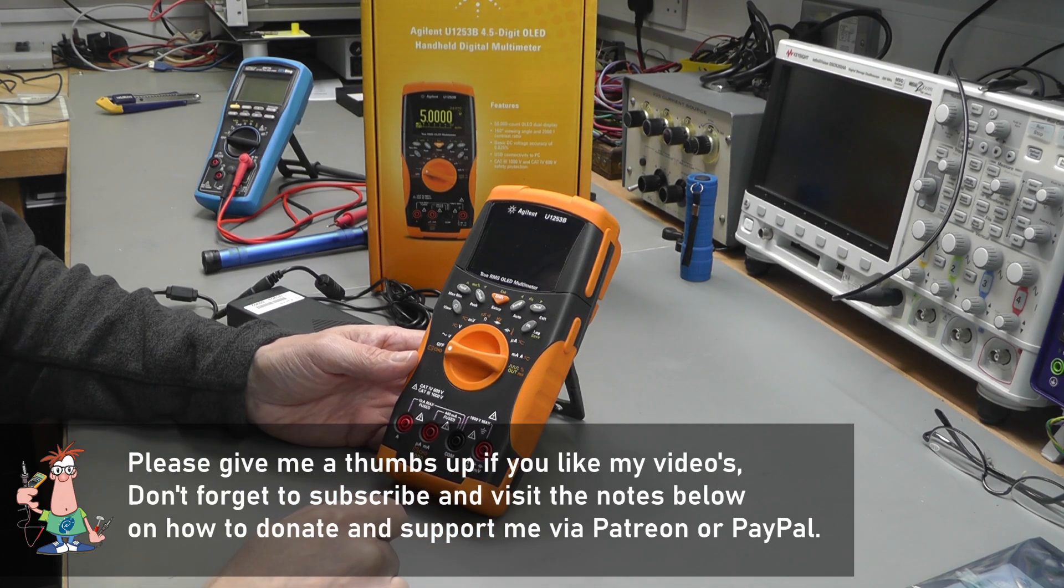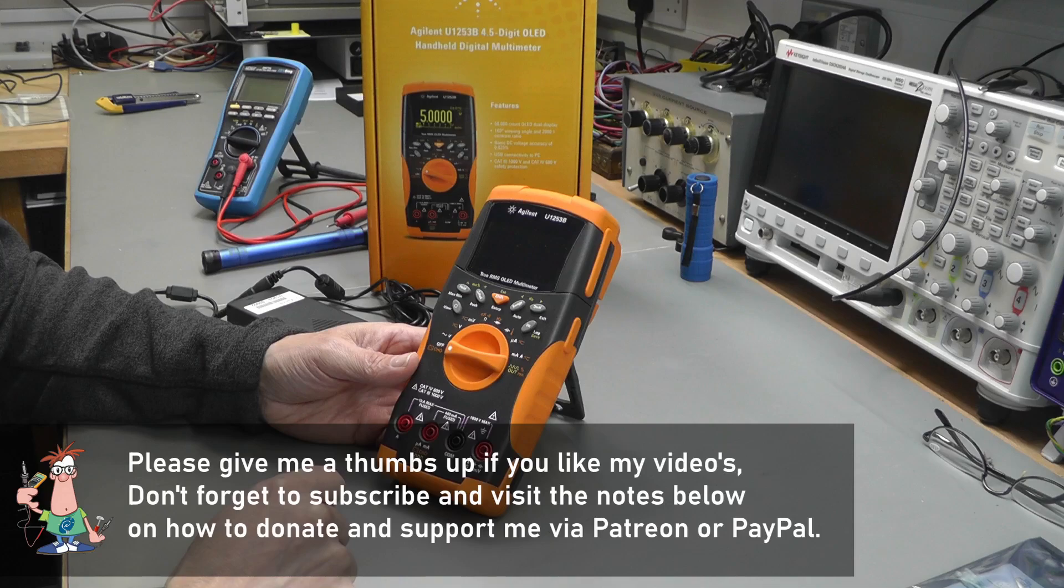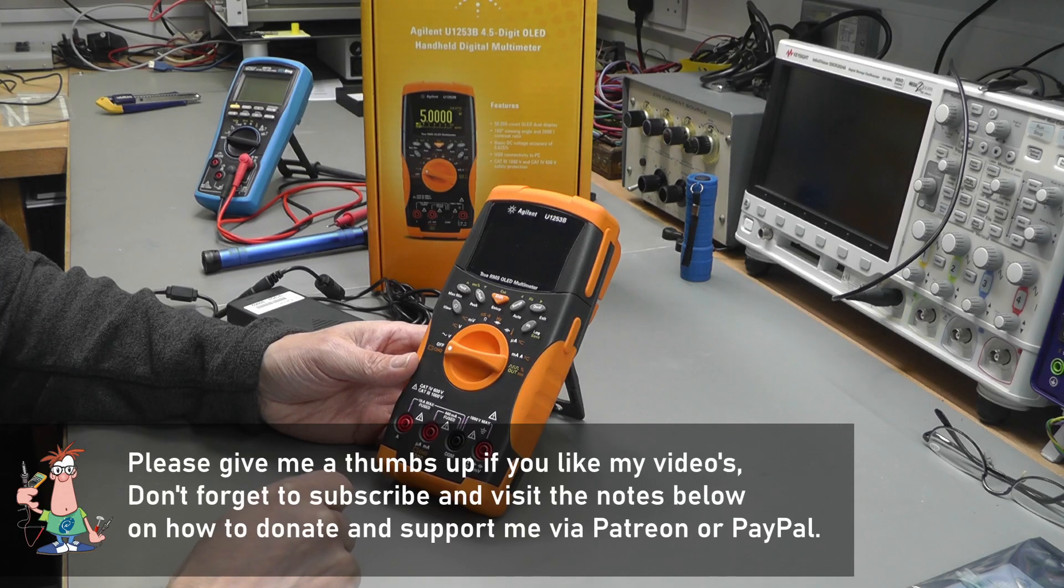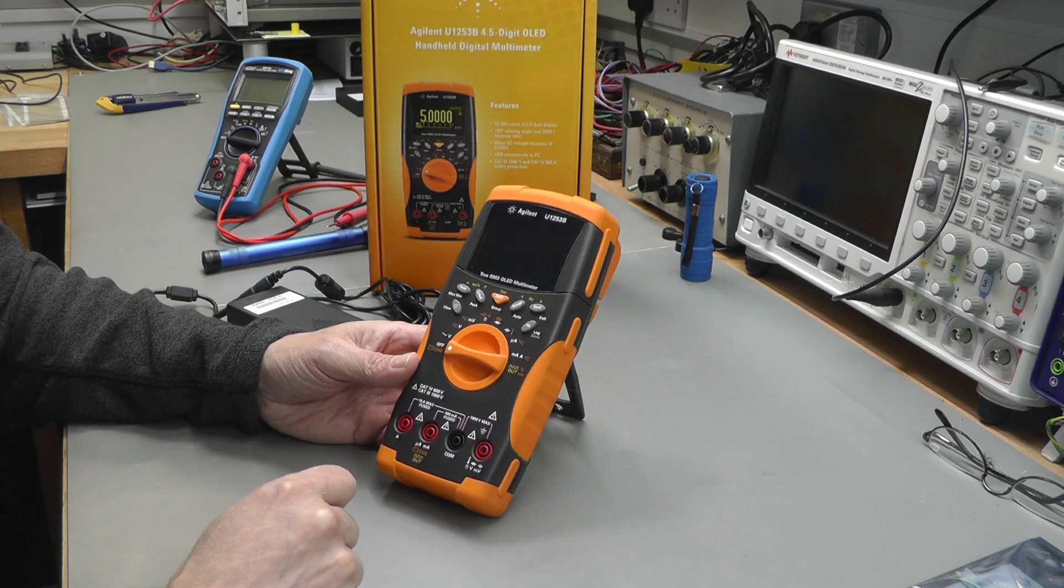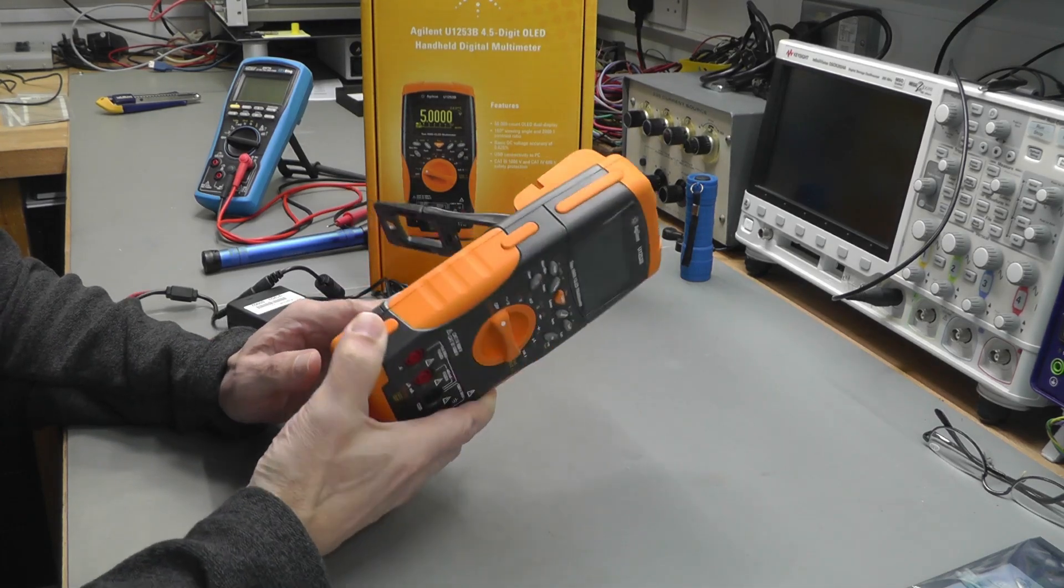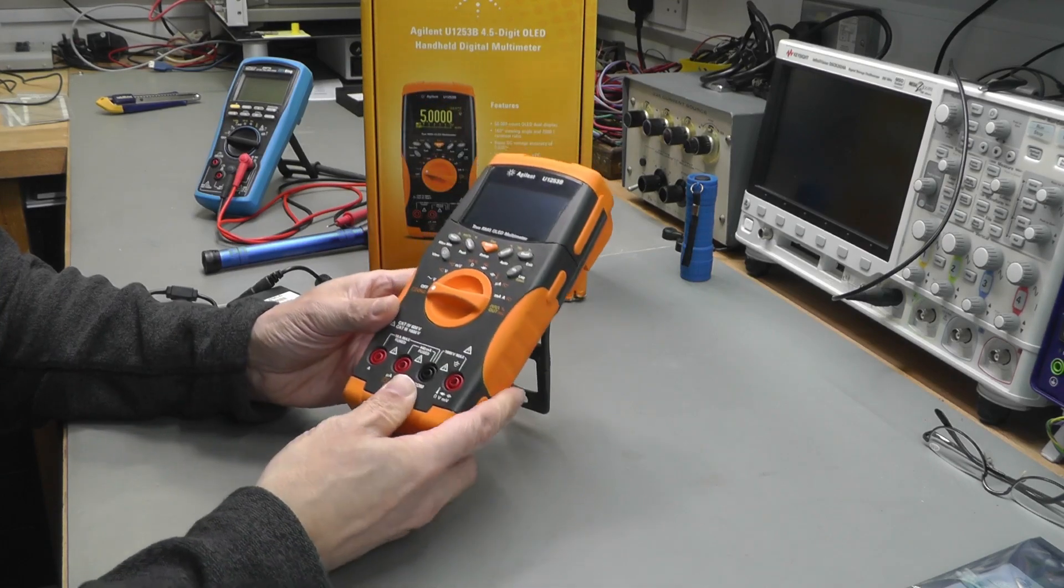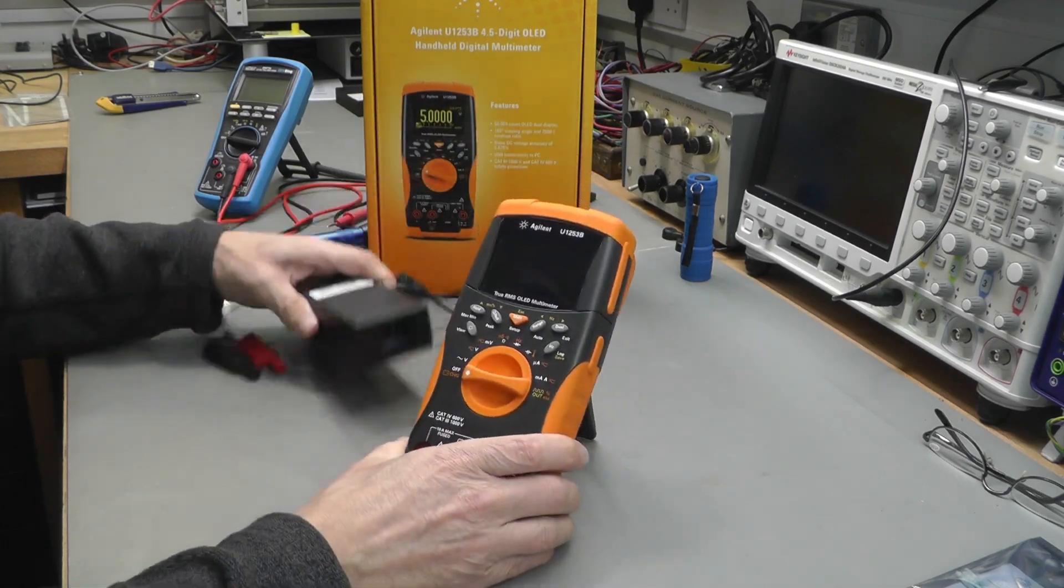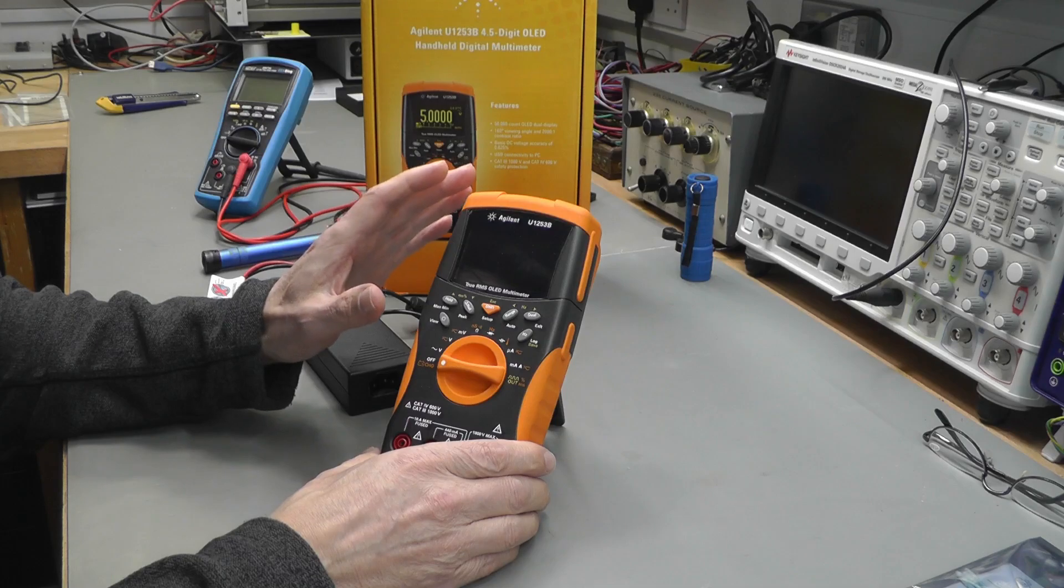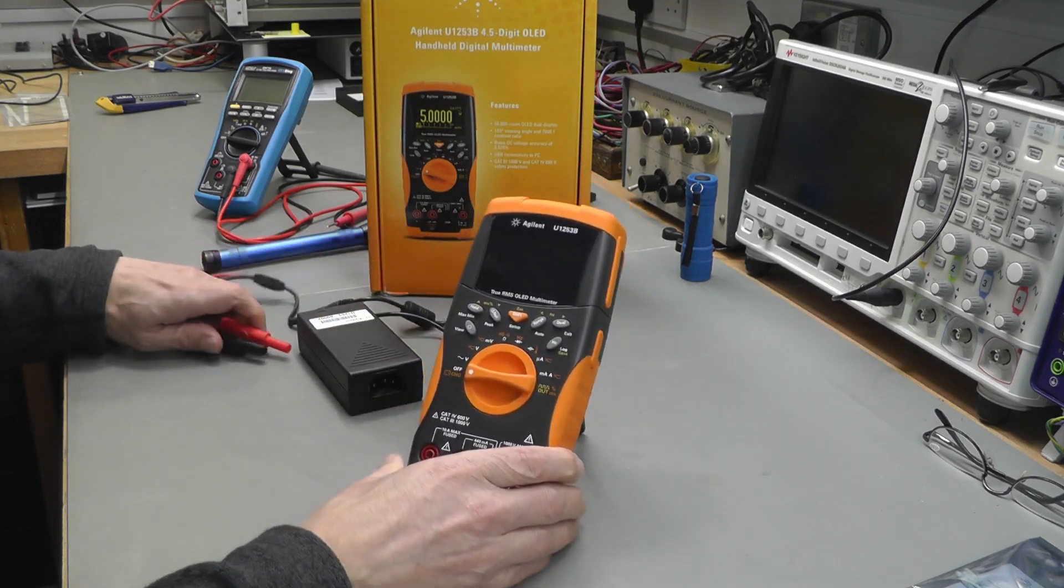Hi everyone, welcome back to the workshop. It's repair time again, and this time I've got an Agilent U1253B true RMS OLED multimeter. It's in immaculate condition and looks like it's got very few hours on it. It comes with the charger because this is an NiMH battery powered multimeter.